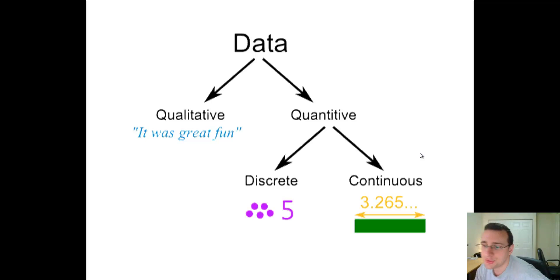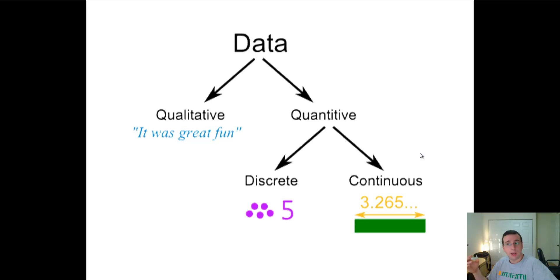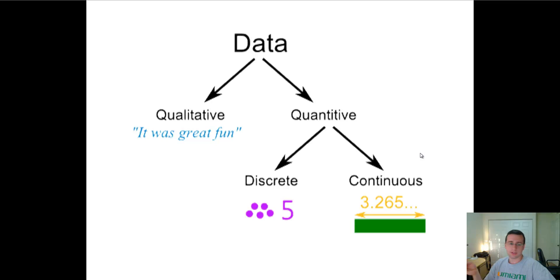Qualitative data is data that describes something — it's usually words like adjectives and things like that, so there are descriptions about what you're observing. And quantitative data is more like numerical data, data that you can actually measure and do math with. And there are two types of that: there's discrete data, which is without decimals, or continuous data, which has all the decimals in between.